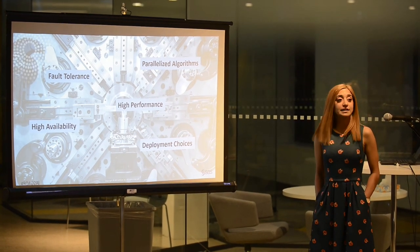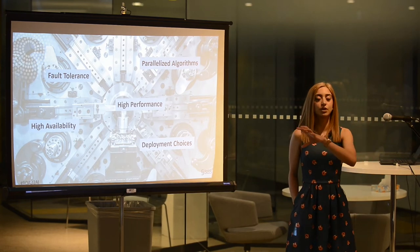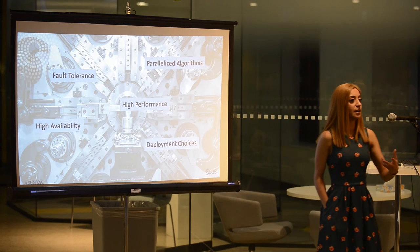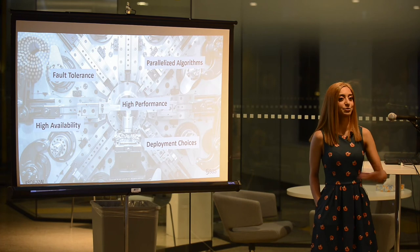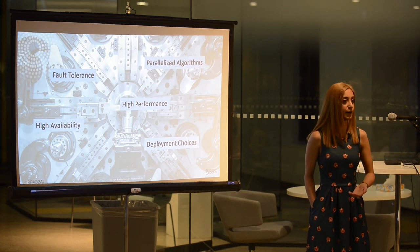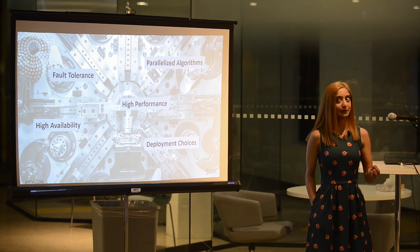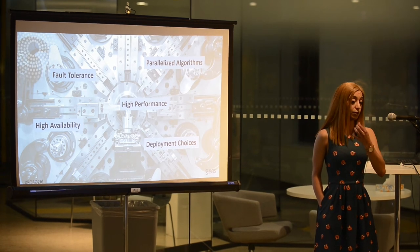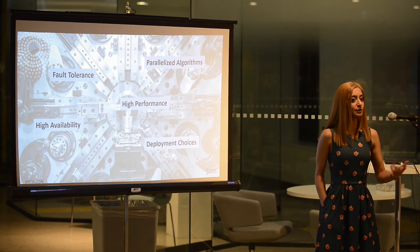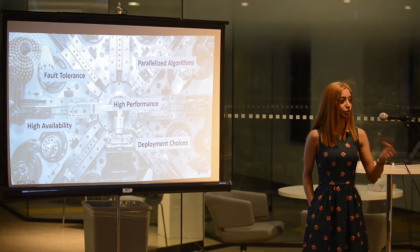There are things like parallelized algorithms that distribute your data on different machines, so when your model runs it can run many, many iterations very quickly. Machine learning algorithms are very data hungry — they do their best when exposed to large amounts of data, so you need an architecture that accommodates that. High-performance or in-memory analytics allows for those multiple iterations, so your models run very, very quickly.